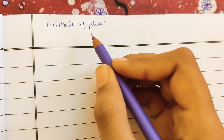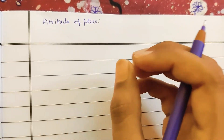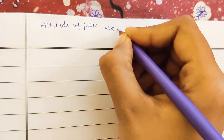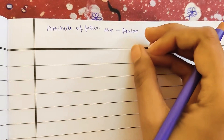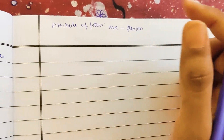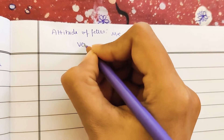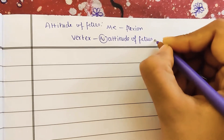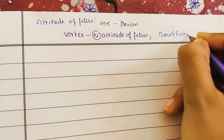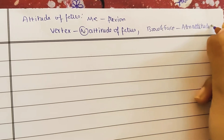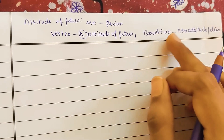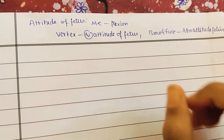Attitude of the fetus is the relationship of different parts of the fetus to each other. The most common attitude is flexion - in the flexed position the baby normally delivers. The presenting part depends on the attitude of the fetus. Vertex is a normal attitude of the fetus. Brow and face are examples of abnormal attitude. To get vertex, the fetus must be fully flexed; in partial or complete extension, that is an abnormal attitude.